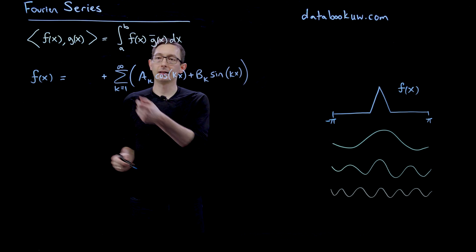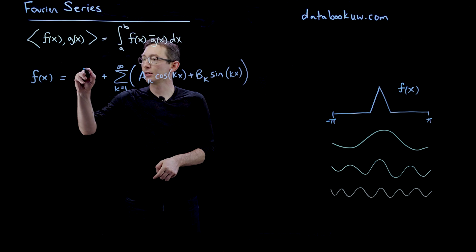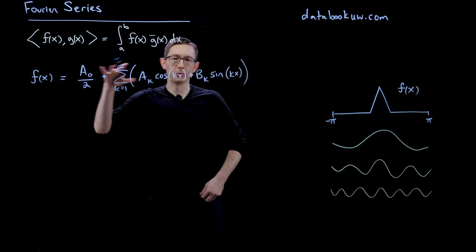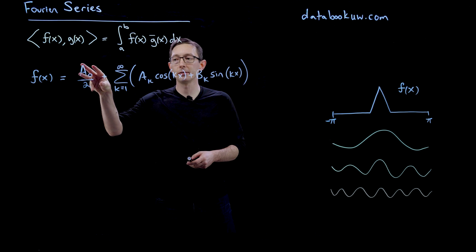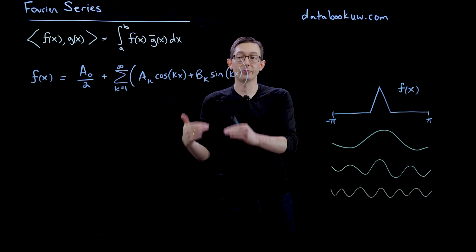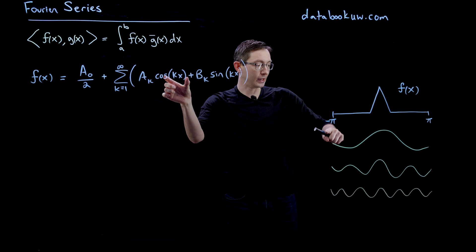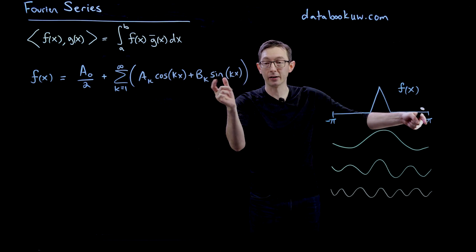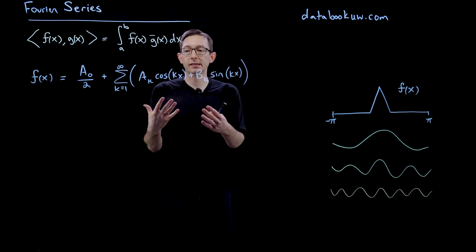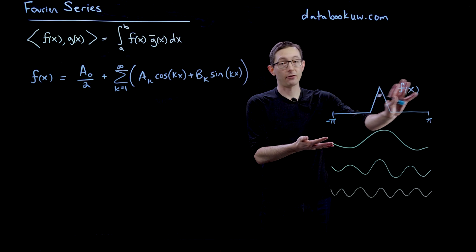I'm also going to add the zeroth frequency. If k equals 0, I get a constant cosine term, so I have an a_0, and I'm going to scale this by 2 for reasons you'll see later. So I have some constant term plus a sum of cosines and sines of increasingly high frequency. The a_k and b_k coefficients tell me how much of each sine and cosine I need to add up to recover my function f.